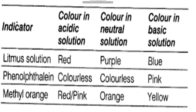Let us summarize all three indicators. Litmus solution is purple in neutral solution, red in acidic solution, and blue in basic solution. Phenolphthalein is colorless in neutral and acidic solutions, but changes to pink in basic solution. Methyl orange is orange in neutral solution, red in acidic solution, and yellow in basic solution.